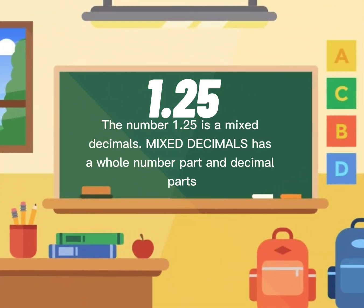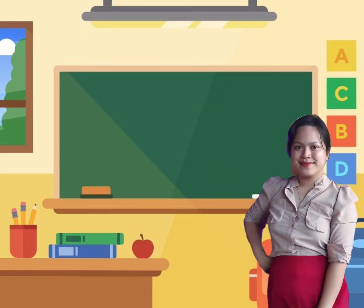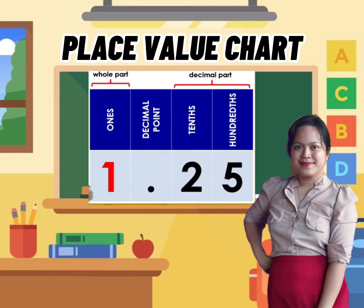The number 1.25 is a mixed decimal. Mixed decimals have a whole number part and a decimal part. Now let us place each digit of 1.25 in a place value chart.